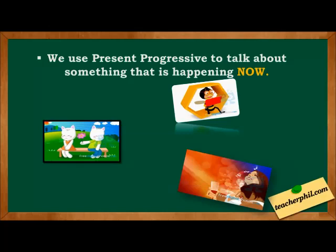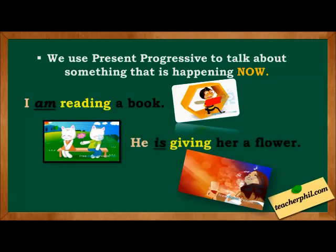The first reason we use present progressive is to talk about something that is happening now, or at the moment of speaking. Examples: I am reading a book. He is giving her a flower. We are having a party. All these sentences happen at the exact moment of speaking.